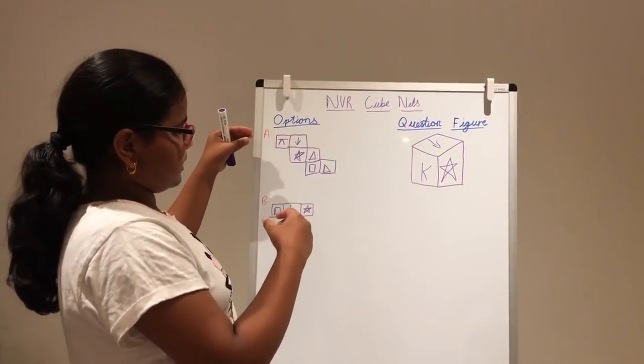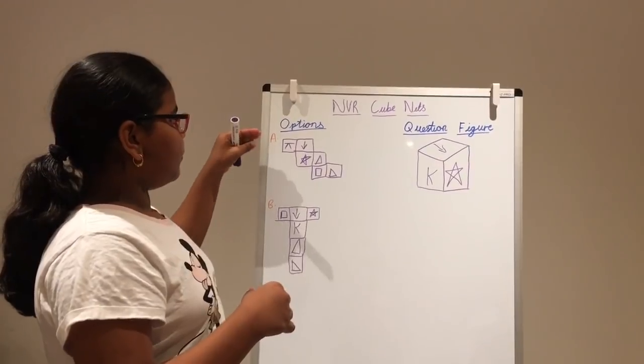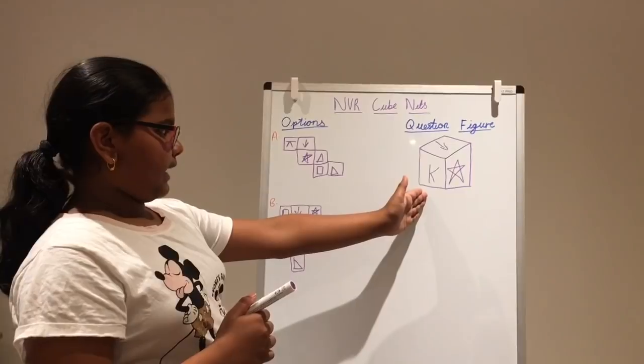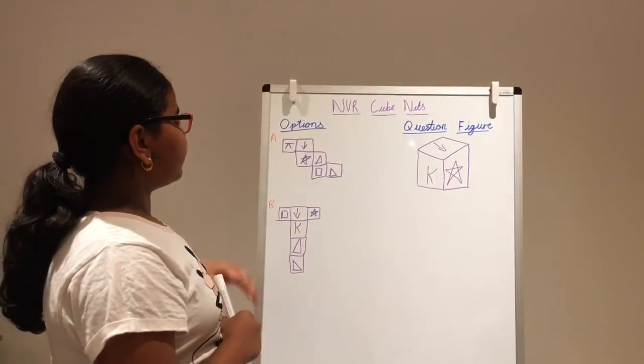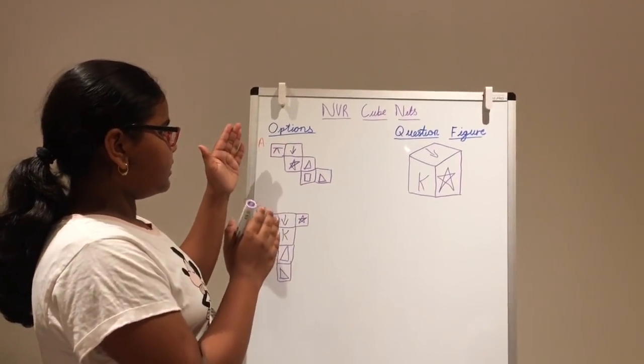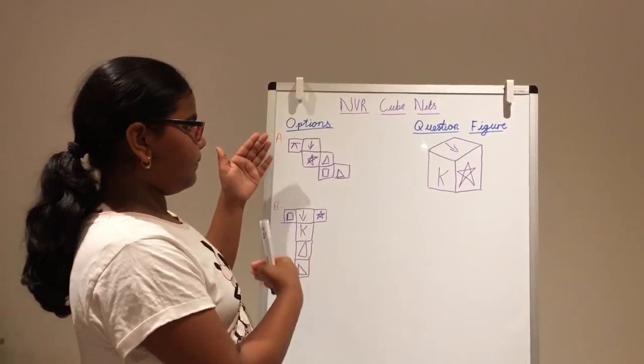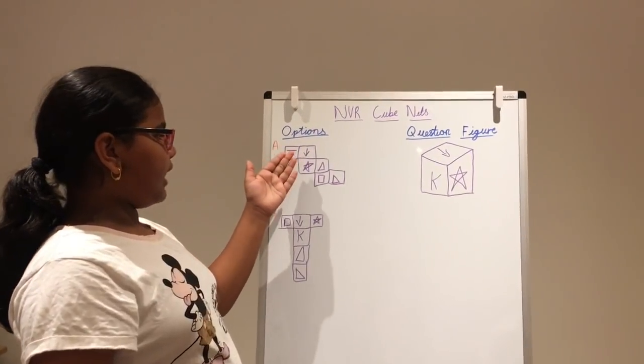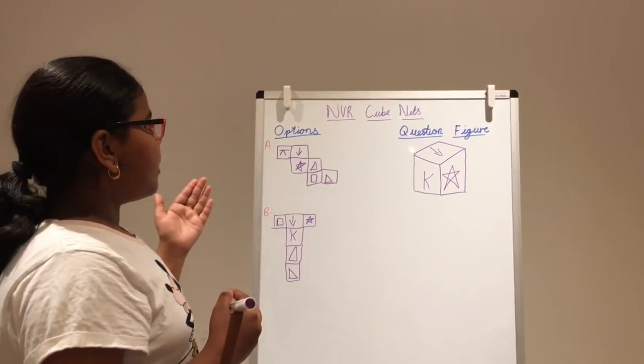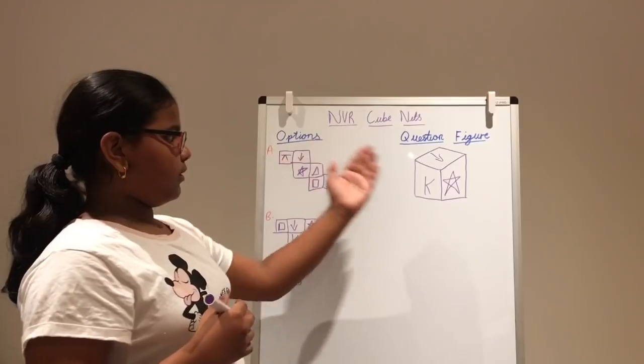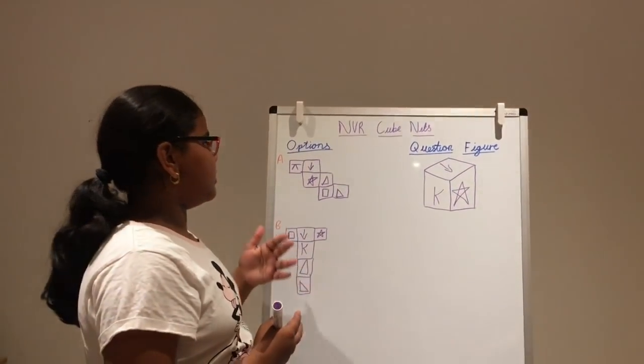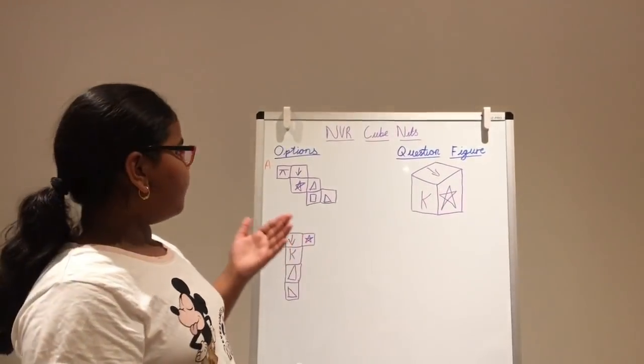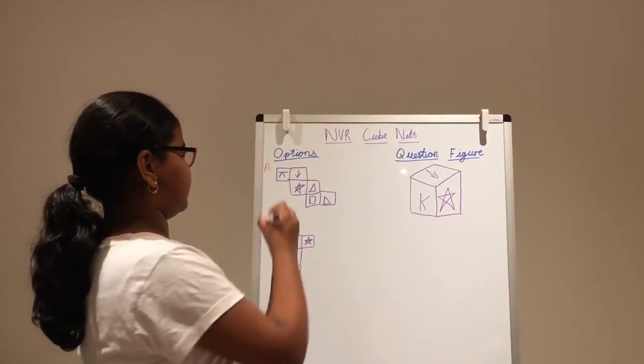And for option A, let's first take our arrow, which is on the top on our question figure, and let's try and visualize if this net would be able to be created as the question figure. Now, let's first think that the K was folded to, so that it would become like the one on the question figure. Then, let's take the star and put it down again, so that it will look like the one on the question figure. And our arrow is pointing where the question figure's arrow is pointing. So, with that example, we know that option A is the correct answer.